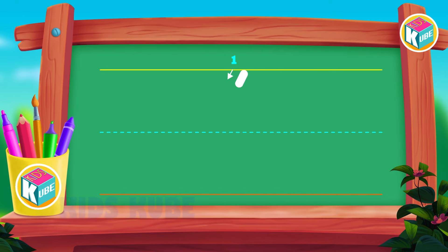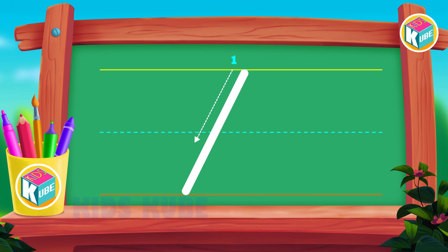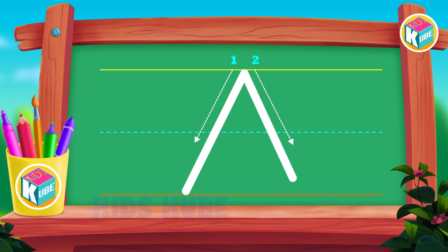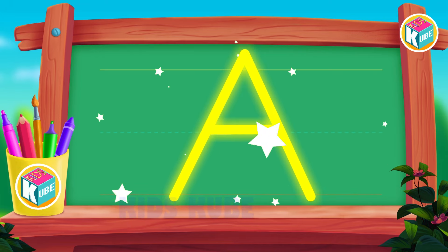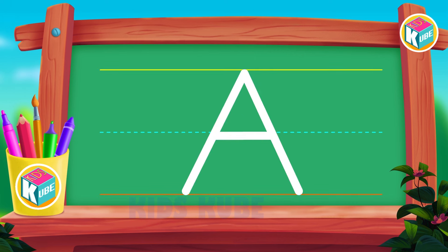First, draw a slanting line from the first line to the third line. After, draw a second slanting line from the first line to the third line. And now draw a slanting line. Wow, this is the first capital letter A.